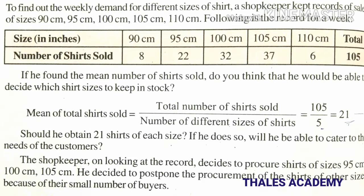To find out the weekly demand for different sizes of shirt, a shopkeeper kept records of sales of sizes 90 cm, 95 cm, 100 cm, 105 cm, and 110 cm. Following is the record for a week — size and number of shirts sold: 90 cm sold 8 pieces, 95 cm sold 22 pieces, 100 cm sold 32 pieces, 105 cm sold 37 pieces, and 110 cm sold 6 pieces. Total shirts sold: 105.